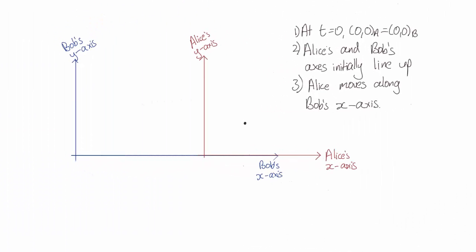Before we start though, let's write things a little bit differently. So previously, when I've written xb and yb, I've meant Bob's x and y-axis. Now what I'm going to do is let xb and yb be the coordinates of the event in Bob's reference frame.